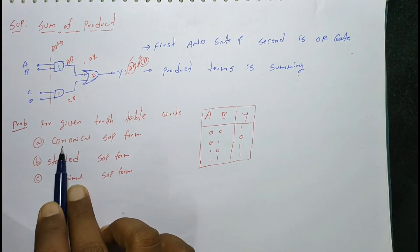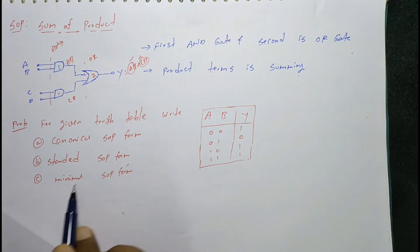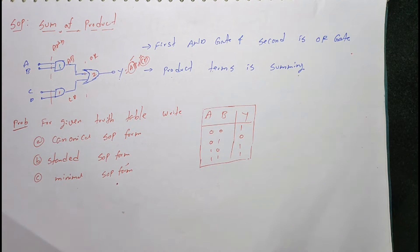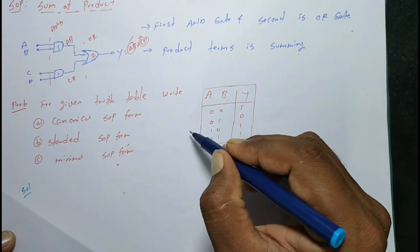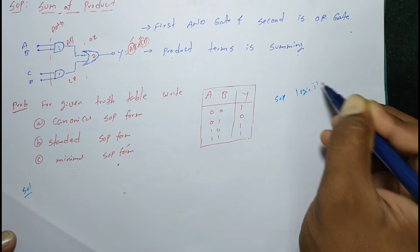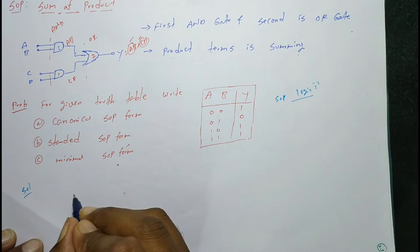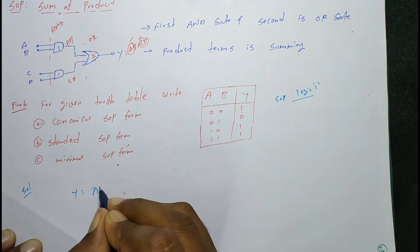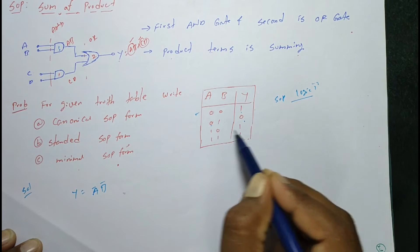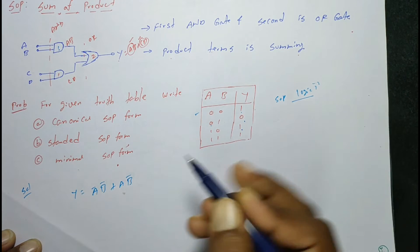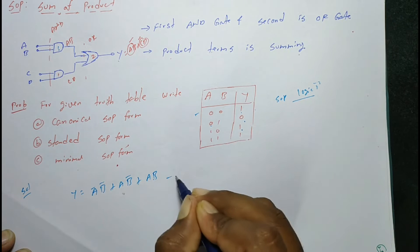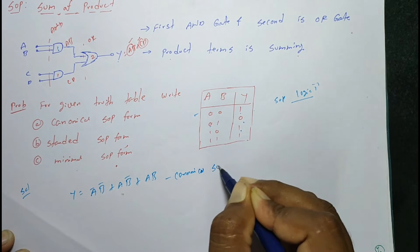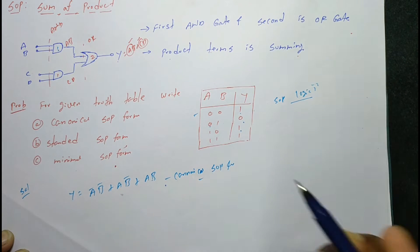There is a small example: find the canonical SOP form, standard SOP form, and minimal SOP form — there is a small difference between these. The given expression, in SOP form for logic 1 operation, is: y equals to ĀB̄ plus AB̄ plus AB. This is the canonical SOP form.